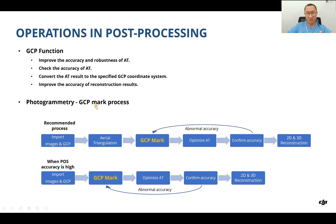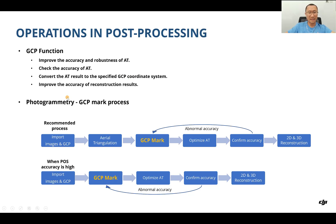Let's review the GCP function: it can improve the accuracy and robustness of aerial translation, check the accuracy of aerial translation, convert the aerial translation results to the specific GCP coordinate system, and improve the accuracy of the reconstruction results.